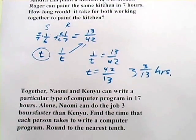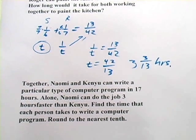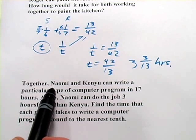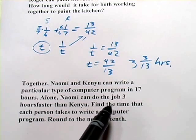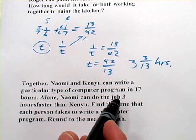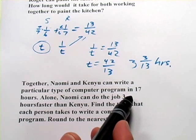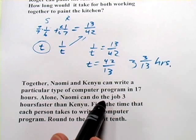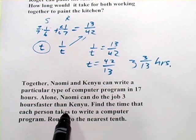This next one is pretty similar. It's another type of work problem, but it's a little bit harder. This one says, together, Naomi and Kenyu can write a particular type of computer program in seventeen hours. So what we're getting is the total time it takes them to do it when they work together. And then, alone, Naomi can do the job three hours faster than Kenyu.